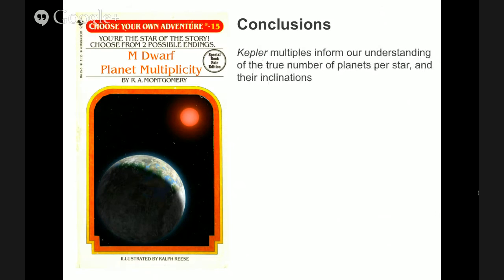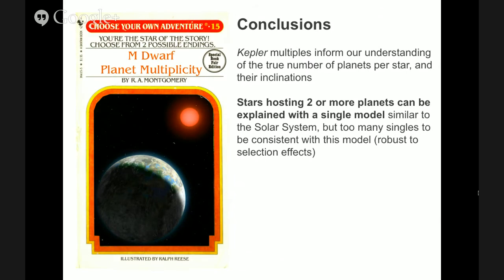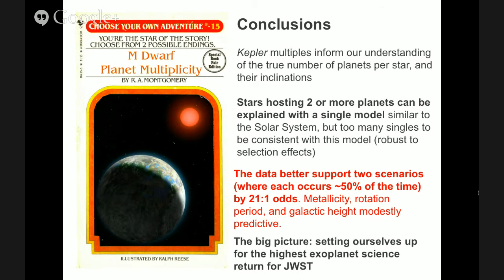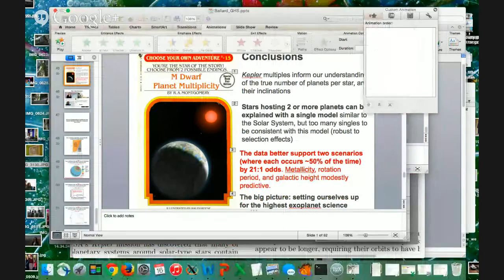In conclusion: Kepler multiples inform our understanding of the true number of planets per star and their inclinations. A picture is emerging of a bimodal distribution of planetary systems — stars hosting two or more transiting planets can be explained with a single model that looks a lot like the solar system, but there are too many singly transiting planets to be consistent with this, and this is robust to possible selection effects. We have to invoke a mixture model, each occurring about 50% of the time, favored by 21 to 1. Some properties of the stars are modestly predictive, but those results are only intriguing at present. The big picture is setting ourselves up for the highest exoplanet science return for James Webb. Thank you so much for your time.